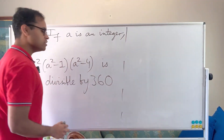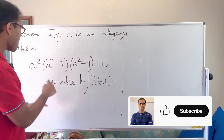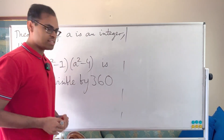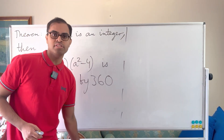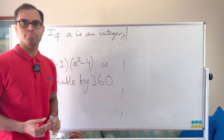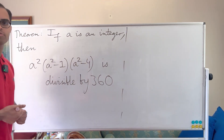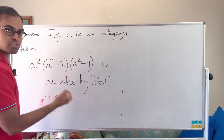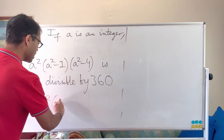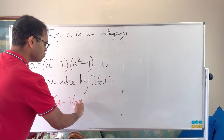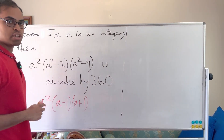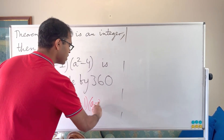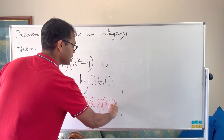We're going to first use a little bit of algebra. So we're going to have a squared times a squared minus 1 times a squared minus 4. If you've seen a squared minus 1 enough times in math, you always think difference of squares formula. So a squared minus 1 is a minus 1 times a plus 1. And similarly, a squared minus 4 is a squared minus 2 squared, so by the difference of squares formula, that's a minus 2 times a plus 2.